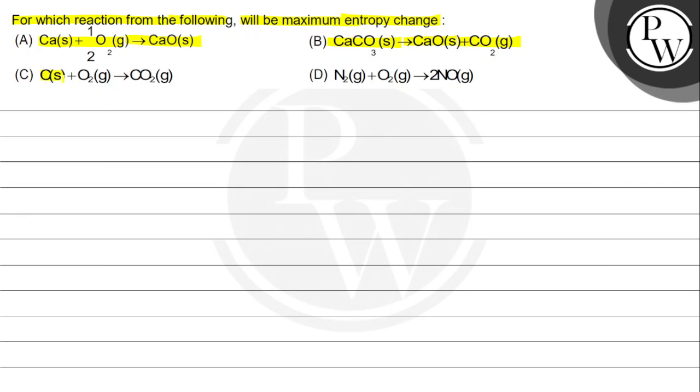Option C: C(s) + O2(g) → CO2(g). Option D: N2(g) + O2(g) → 2NO(g).